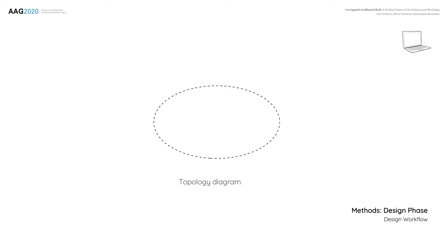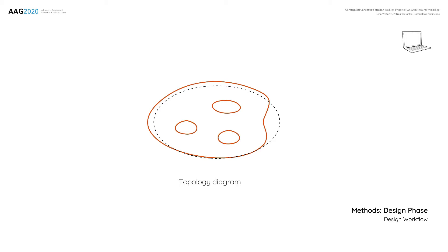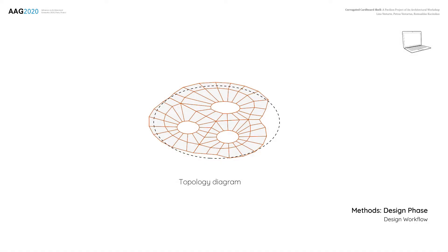The first step in the design stage was to create two-dimensional outlines and generate planar topology patterns within these outlines. Various methods for generating topology patterns were explored, but for the pavilion structure, the planar surface represented by the boundary curves was divided into a set of topologically simpler patches, each subdivided using a quad pattern.